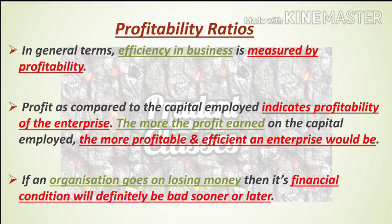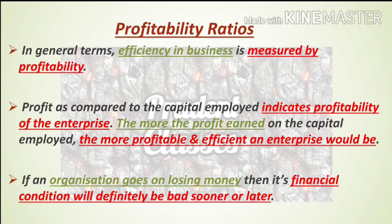Now, the next point says: if an organization keeps on losing money, then its financial condition will definitely be bad sooner or later. So guys, an organization employs capital, i.e., it makes investments, and yet keeps making losses — then its financial condition, today or tomorrow, will deteriorate, and one day it will have to close down. So you have to understand: profit is a must for a business to continue. If a business wants to sustain long term, it has to earn profit. Where losses grow, the financial stability and condition of the organization will deteriorate, and that will lead to the closure of that organization.